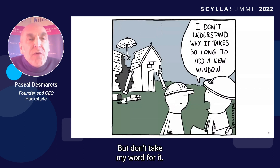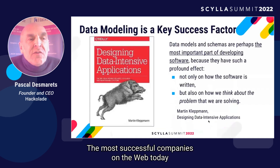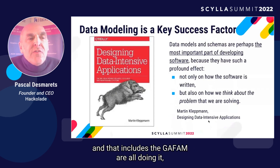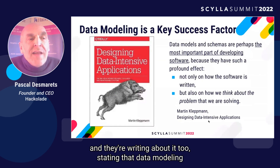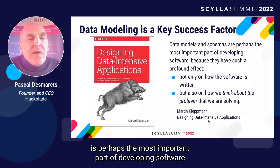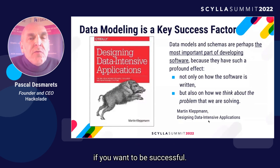But don't take my word for it. The most successful companies on the web today, and that includes the GAFAM, are all doing it. And they're writing about it too, stating that data modeling is perhaps the most important part of developing software if you want to be successful.